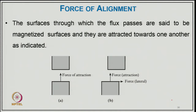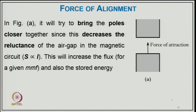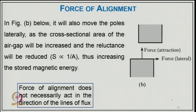Surfaces through which flux passes are magnetized surfaces and are attracted toward each other. There is an attraction force as well as a lateral force if the poles are not fully aligned. In figure (a), the poles try to come closer, decreasing the reluctance of the air gap, increasing the flux for a given MMF and the stored energy. In another figure, the poles also move laterally as the cross-sectional area of the air gap increases and the reluctance is reduced (since S is inversely proportional to A), increasing the stored magnetic energy. Force of alignment does not necessarily act in the direction of lines of force.